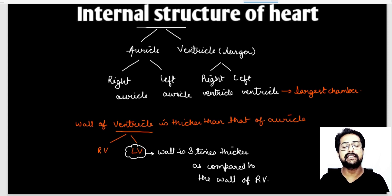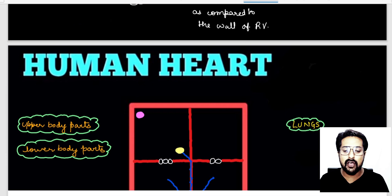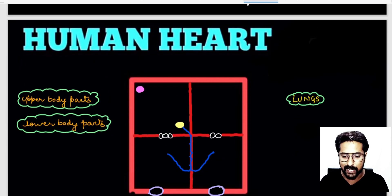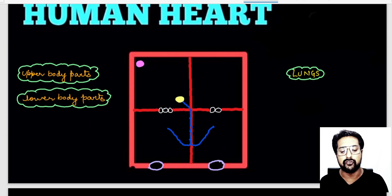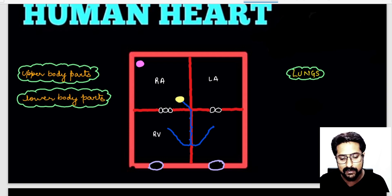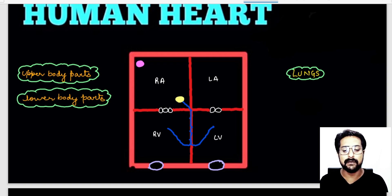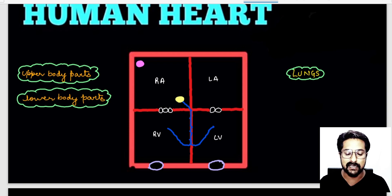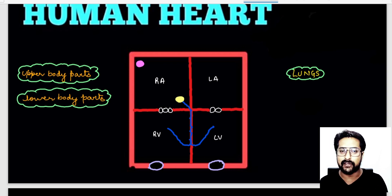I have prepared a hypothetical diagram to understand the structure of the human heart, showing four chambers. The upper two are the right auricle and the left auricle, and the lower two chambers are the right ventricle and left ventricle. The human heart is divided into these four chambers: right auricle, left auricle, right ventricle, and left ventricle.